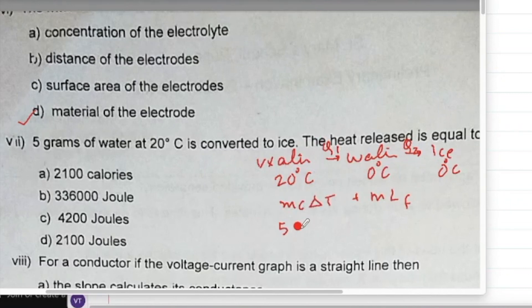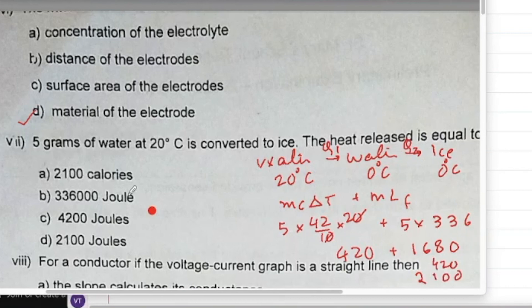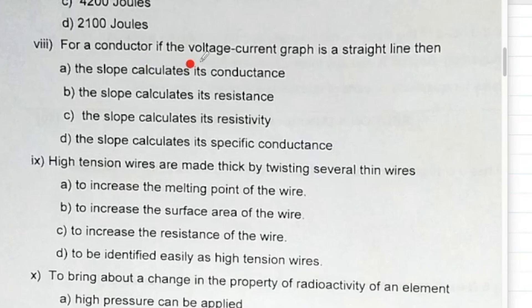420 plus this into 5 will be 2100, correct. For a conductor, if the voltage-current graph is a straight line, then the slope calculates the conductance.